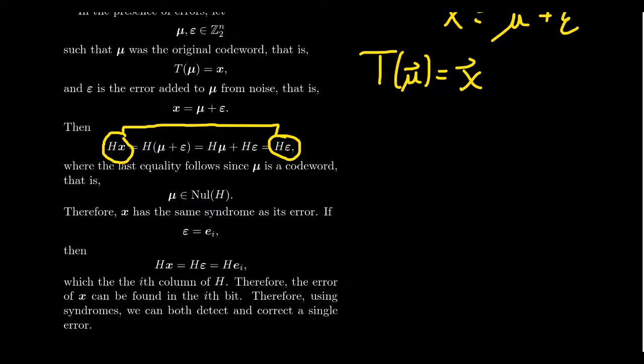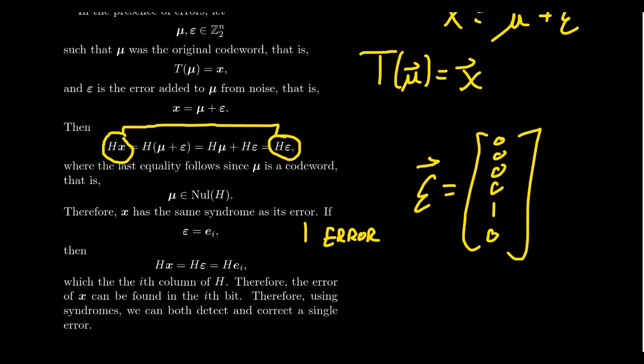Now, if there was a single error, just a single error. So if you had just one error, that means we changed one of the bits. So our error would look something like, oh, let's say we changed the fifth position. So we get 000010, something like that. We have a five-bit message. The fifth one changed. Well, notice this is just E5. This is just E5. And as such, h of epsilon would be h of EI.